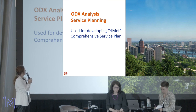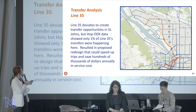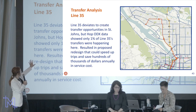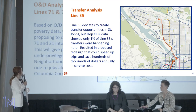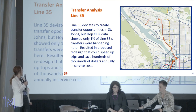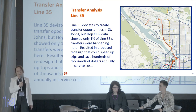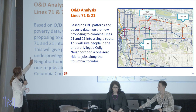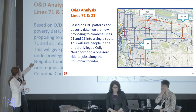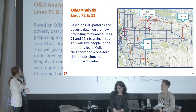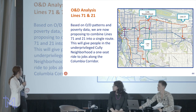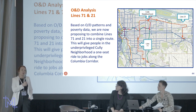The first use case deadline was for developing TriMet's Comprehensive Service Plan. They were studying Line 35, which deviates to create transfer opportunities in St. Johns. But when we looked at the OD data, only 1% of Line 35 transfers were happening there. This resulted in a proposed redesign that sped up trips, with planners estimating savings of hundreds of thousands of dollars in annual service costs. Another Comprehensive Service Plan case looked at Lines 71 and 72 based on OD patterns and census data — we're now proposing to combine two lines into a single route, giving people in the underprivileged Collie neighborhood a one-seat ride and faster service to their jobs.